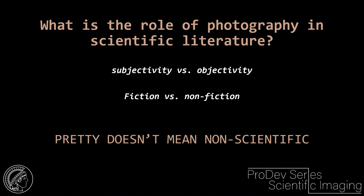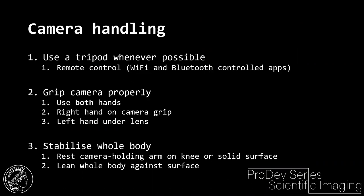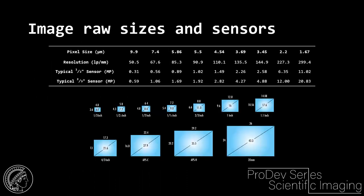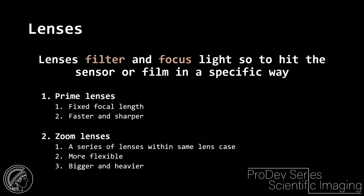Pretty does not mean non-scientific. We'll go through tricks and ideas that make figures look more pleasant while keeping them as objective as possible. Starting with photography, the very first consideration is how to handle a camera. When photographing artifacts in a lab, a tripod is usually available, but if not, the camera should be gripped properly using both hands and stabilizing the whole body. It's also important to understand the camera's sensors and RAW formats.